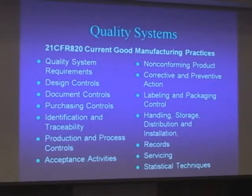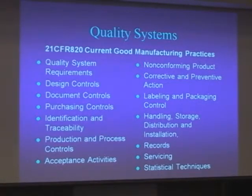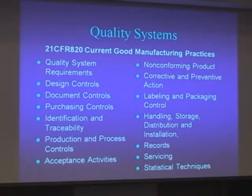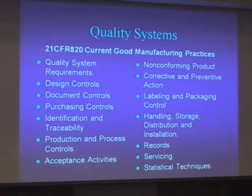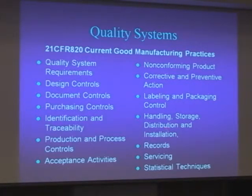These are the headings from 21-CFR820, the US FDA Code of Federal Regulations. As you can see, it pretty well defines your business. If you follow the GMPs, if you're compliant with the GMPs, you're doing good business things — stuff you would normally expect, like design control, keeping records, and control of your handling and storage. All of these things need to be considered and answered.